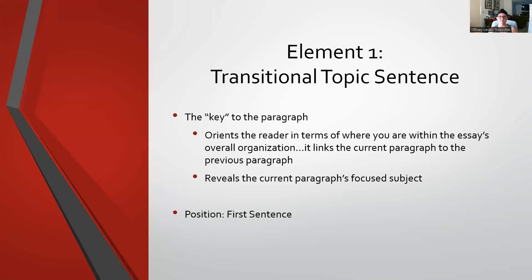Element one is the transitional topic sentence. What does it do? It is the key to the paragraph, much like your thesis statement is the key to your essay. The transitional topic sentence orients the reader in terms of where you are within the essay's overall organization. It links the current paragraph to the previous paragraph, it reveals the current paragraph's focused subject, and it is positioned as the first sentence of the paragraph.